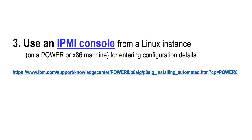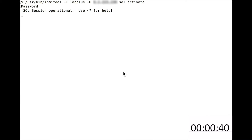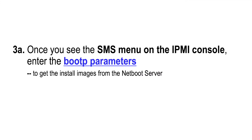Step 3: we use an IPMI console from a Linux instance running on a Power or x86 machine for entering installation details. Step 3a: once you see the SMS menu on the IPMI console, enter the bootp parameters so as to get the install images from the netboot server.